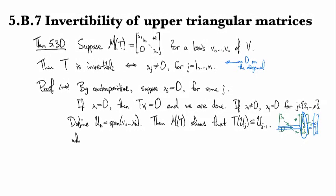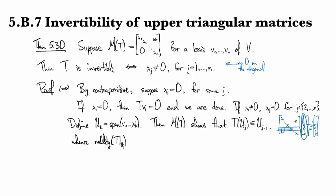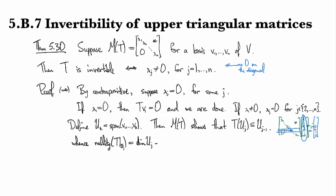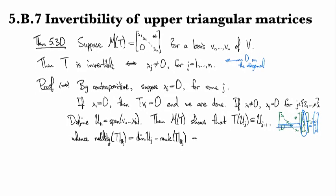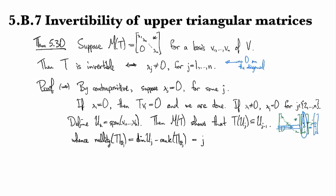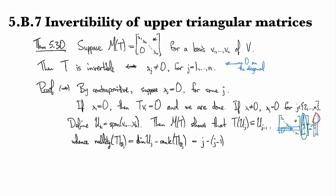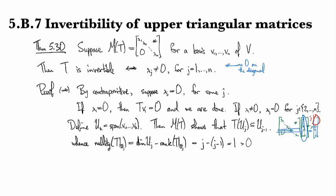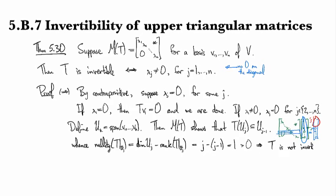So as a result, if we look at the nullity of T restricted to U_j, by the rank-nullity theorem this is the dimension of U_j minus the rank of T restricted to U_j. The dimension of U_j is j, and the rank of the restricted operator is j minus one because there's only j-1 entries that can be non-zero. So that's one. That tells us that T is not invertible because it has a non-trivial null space.